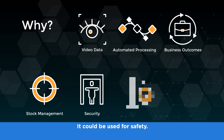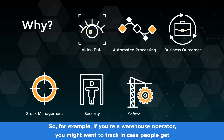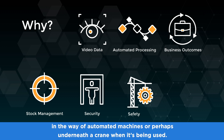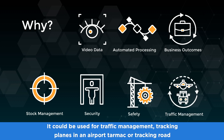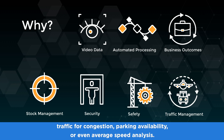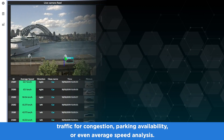It could be used for safety — for example, if you're a warehouse operator you might want to track in case people get in the way of automated machines, or perhaps are underneath a crane when it's being used. It could also be used for traffic management: tracking planes on an airport tarmac, or tracking road traffic for congestion, parking availability, or even average speed analysis.